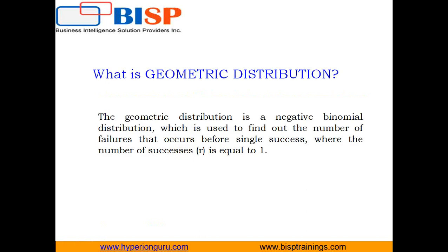The trials are independent. The binomial distribution models situations where the number of trials is fixed and the random variable is the number of successes. The geometric distribution requires exactly one success, and the random variable is the number of trials required to obtain the first success.